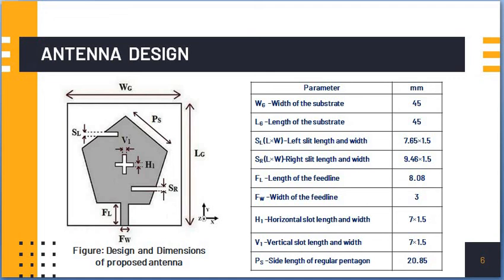As the title says, slits and slots loaded. Two slits and two slots have been loaded here. SL and SR are the two slits. One is loaded at the left top side of the pentagon shaped antenna and SR is the other slit that is loaded at the bottom of the right side of the pentagon shaped patch antenna.